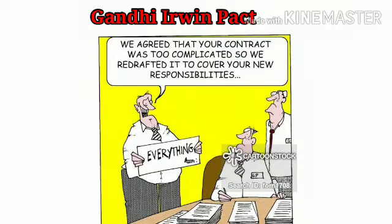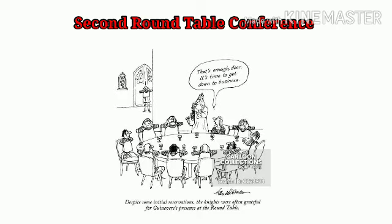The Second Round Table Conference was held from September 7, 1931 to December 1, 1931. Gandhiji attended this conference as a representative of the Indian National Congress Party.